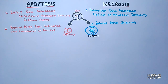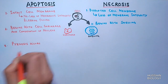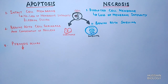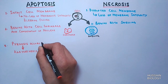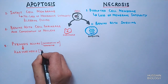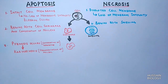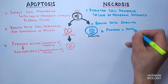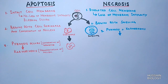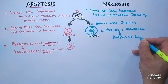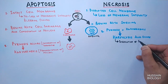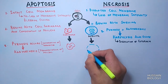Another important difference is that in apoptosis, pyknosis occurs — that's the condensation of chromatin — which is followed by karyorrhexis, the fragmentation of the nucleus. So first the chromatin material condenses and then gets fragmented. In necrosis, both pyknosis and karyorrhexis also occur, but these are followed by karyolysis — the dissolution of the nucleus — as you can see in this diagram.